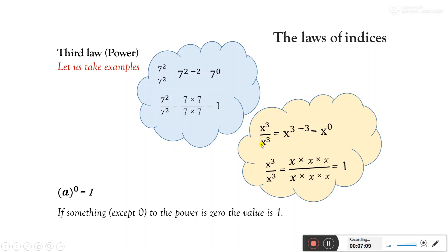Similarly, x cube divided by x cube: same base, in division form, we subtract powers — x to the power 3 minus 3 equals x to the power 0. And simplifying directly, x cube over x cube means we cancel all x's, giving 1. So we can confirm that anything raised to the power 0 equals 1.